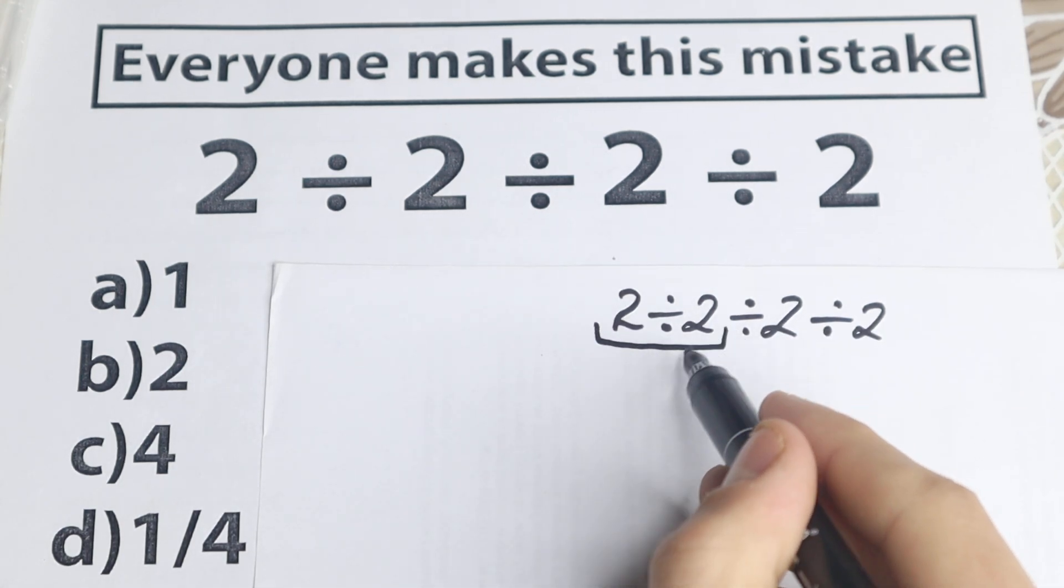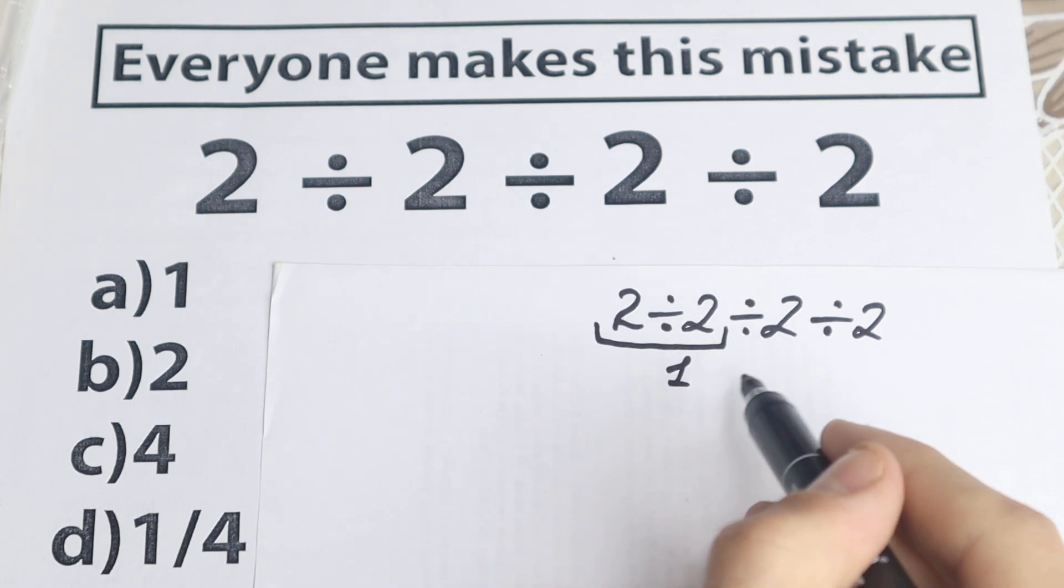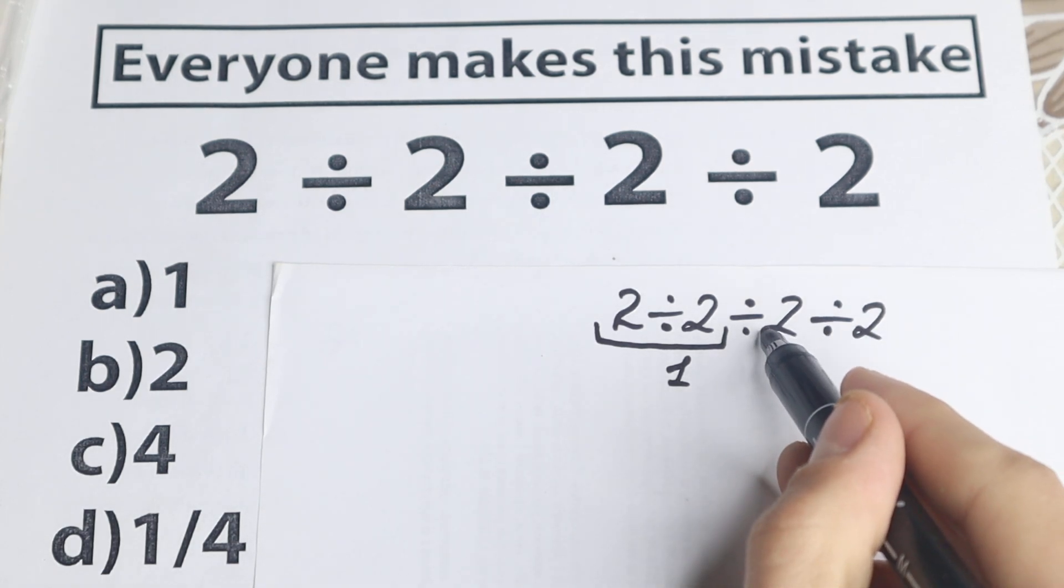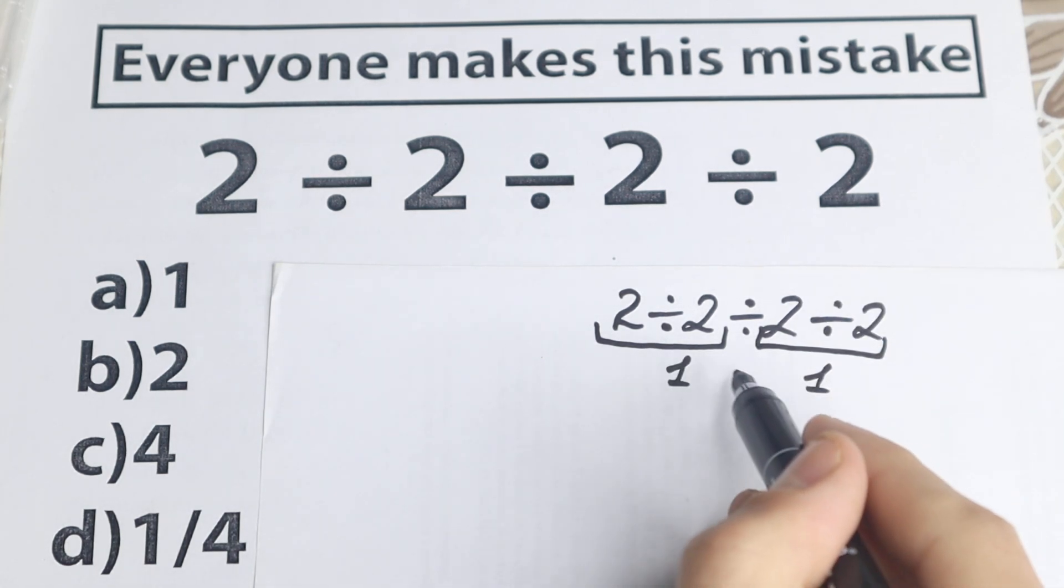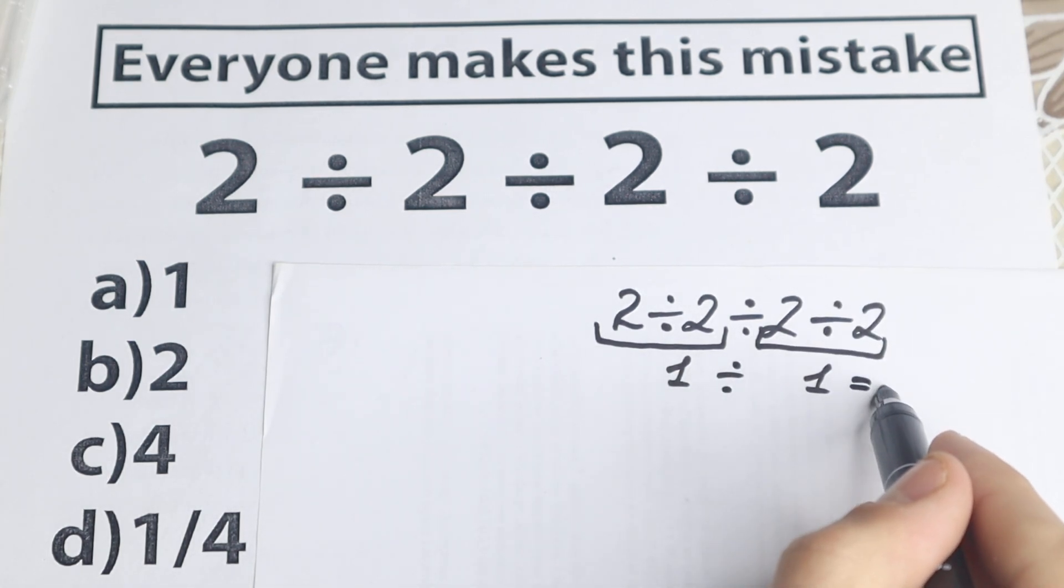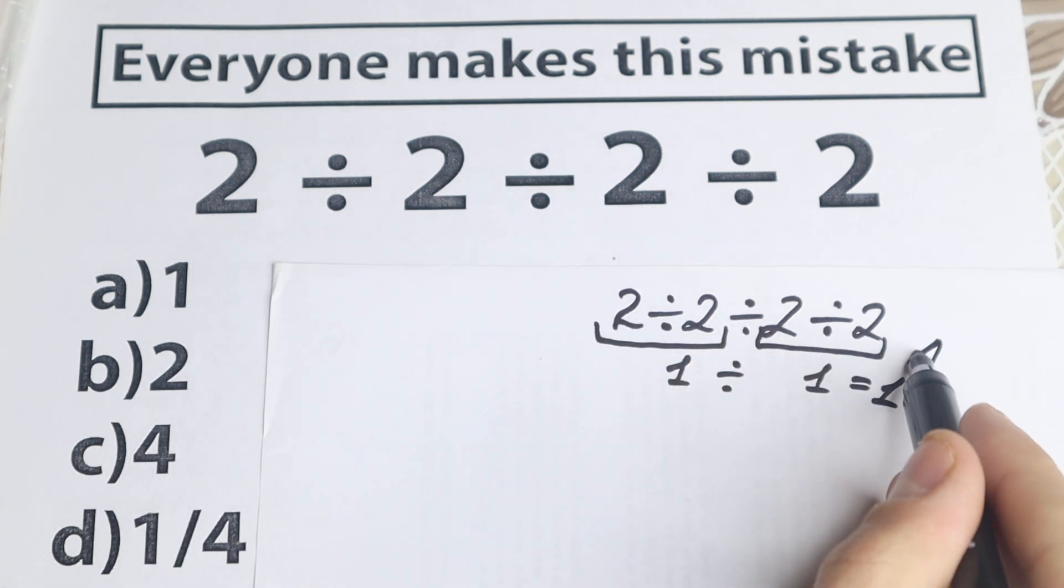2 divided by 2 equal to 1, and right here they go from the end. 2 divided by 2 equal to 1. So as a result 1 divided by 1 equal to 1, and a lot of students say, okay, option A is the correct answer.